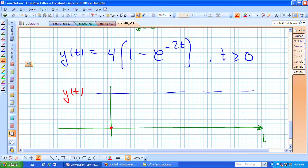As t gets larger, eventually this particular piece decays down to 0, and we approach 4.